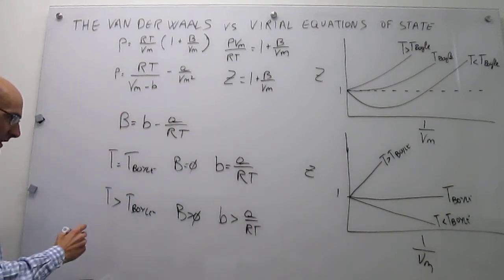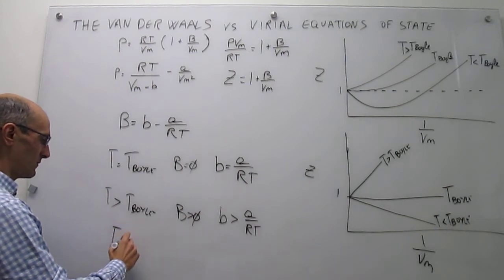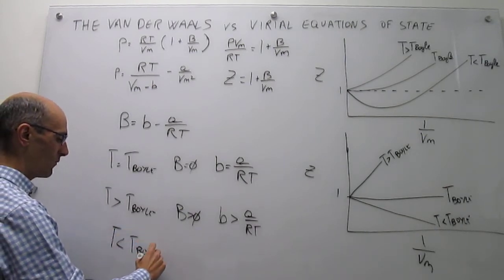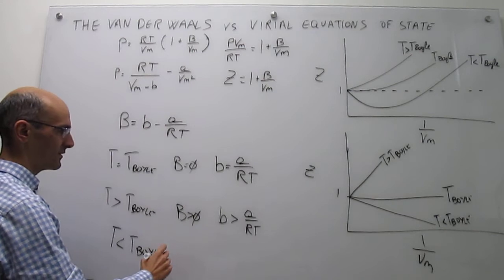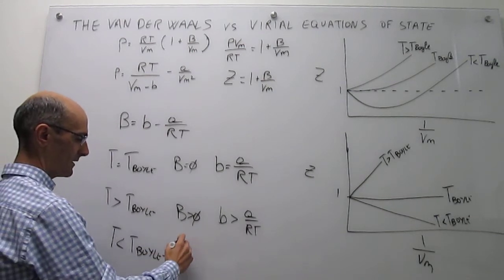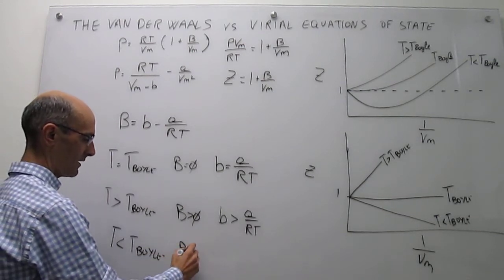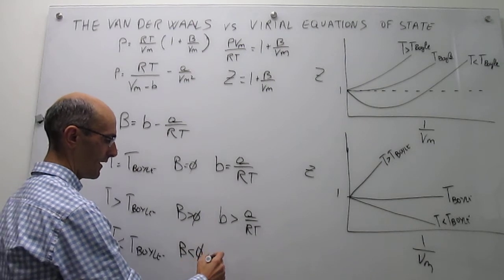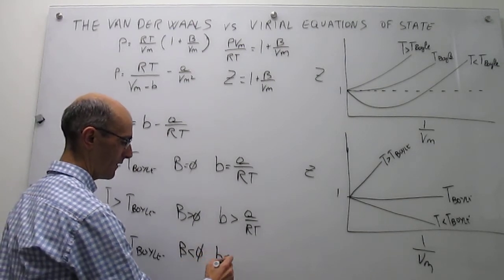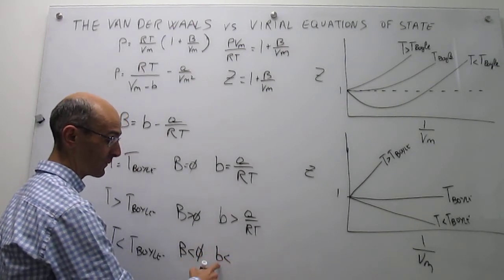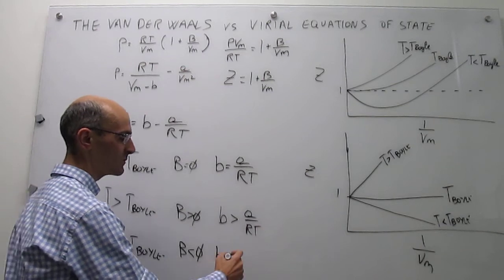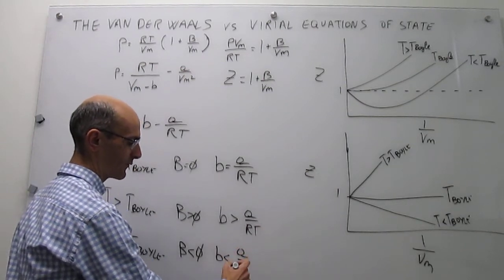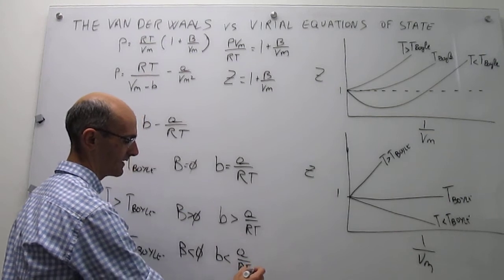The final limit is straightforward: when attractions are dominating, the second Virial coefficient B is negative, and the van der Waals repulsion parameter b is smaller than the attraction parameter a divided by RT.